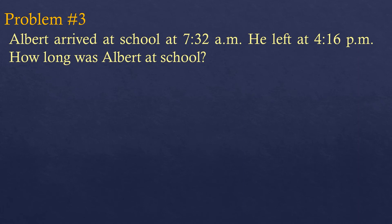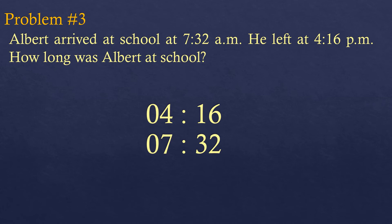Let's have another problem — Problem number 3. Albert arrived at school at 7:32 in the morning and left at 4:16 in the afternoon. How long was Albert at school? The time ended at 4:16 PM and started at 7:32 AM. The top number is smaller than the bottom because they are not in the same dimension — one is afternoon and one is morning.